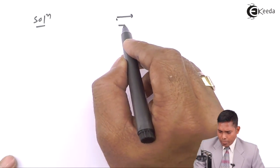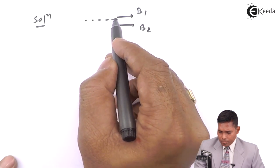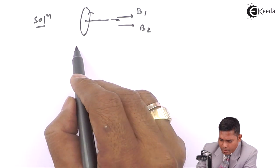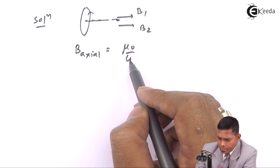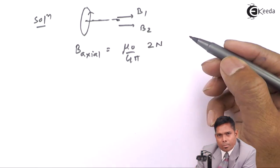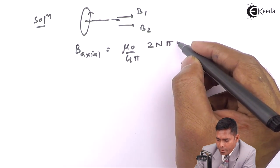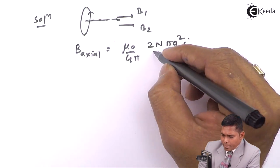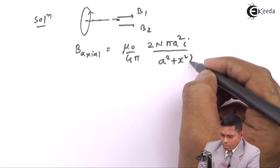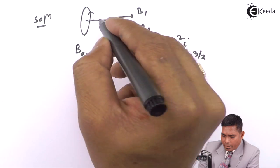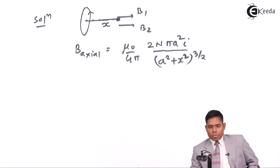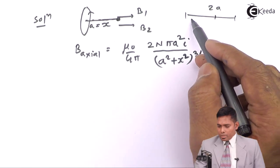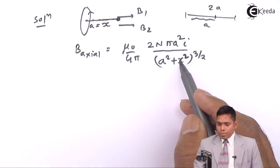The center point is subjected to two magnetic fields, B1 and B2. For both, this is the axial position. The general formula for the axial magnetic field is: B = (µ₀/4π) × (2nπa²I) / (a² + x²)^(3/2), where n is the number of turns, a is the radius, I is the current, and x is the axial distance. In our problem, the separation between the two coils is 2a, so the midpoint is at x = a.